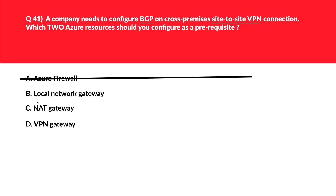Let's now look at option B. Option B says local network gateway. Local network gateway is required to represent an on-premises VPN device. This can be one of the potential answers — we'll keep this.